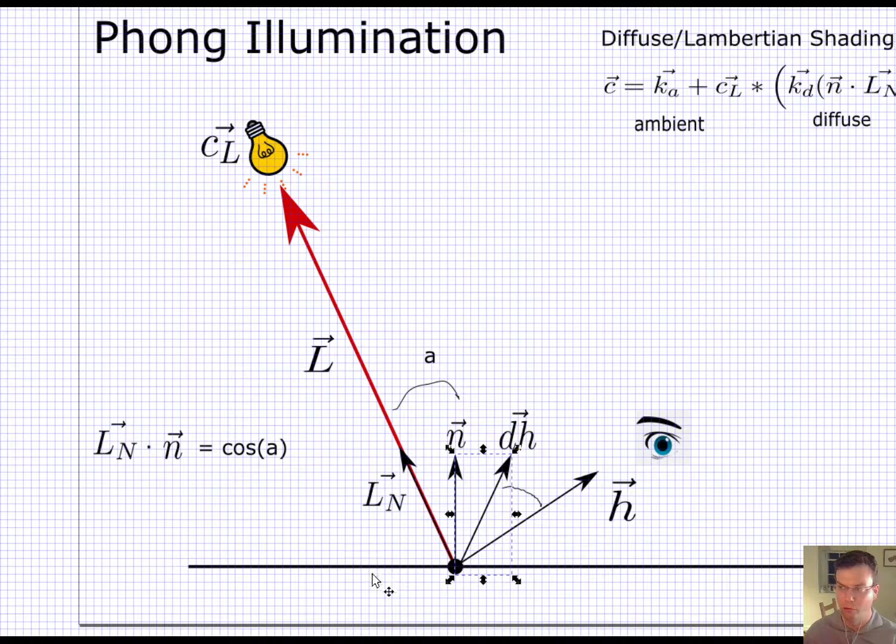So this is an angle of a here, and this is also an angle of a. So perfect angle in, angle out. But if I happen to not actually be coinciding with that perfectly, I'm going to fall off. And let's say that this angle is b.